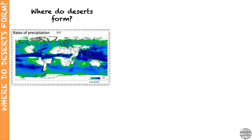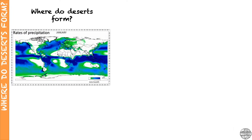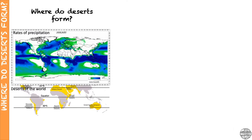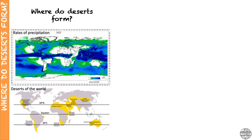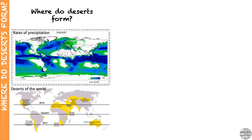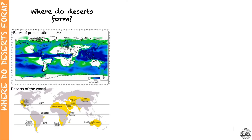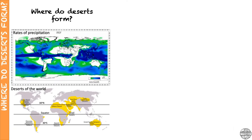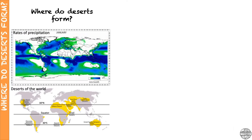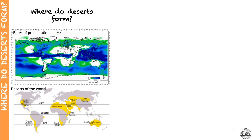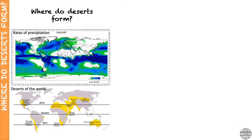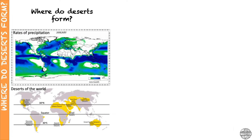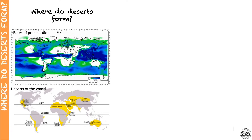Here is the same map we've seen previously with the rates of precipitation, and now we will look at the locations of the main deserts in the world. If you observe the maps closely, you will note that the regions with lower rates of precipitation closely match the locations of the deserts, because these are regions where we have high potential rates of evaporation — they are the regions where deserts may form.